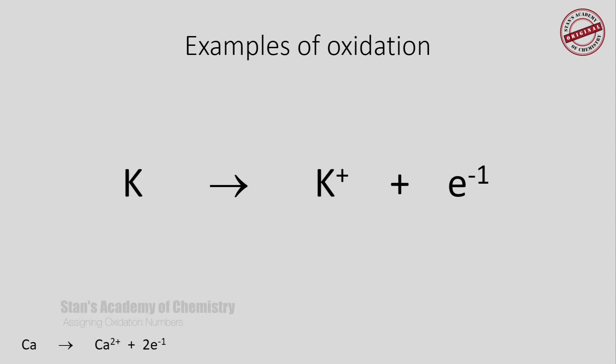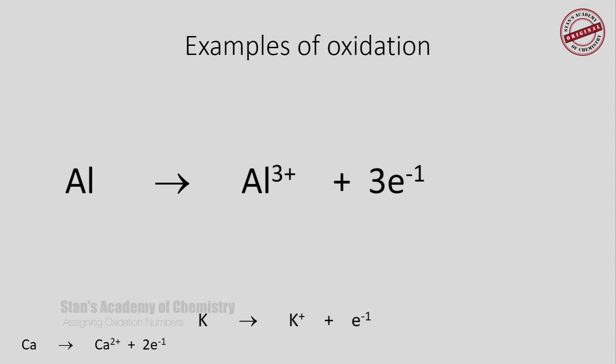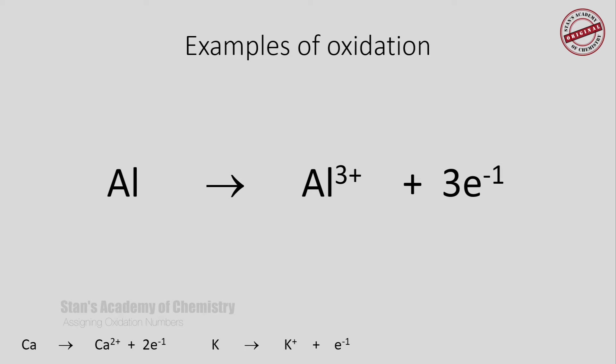Potassium on the left side has a zero oxidation state because the number of protons equals the number of electrons — it is +19 and -19. On the product side, it has only 18 electrons and 19 protons, as you can verify in the periodic table. Hence, the process is oxidation because there is an increase in oxidation number. Aluminum on the reactant side has a charge of zero because it is a neutral atom. On the product side, it has lost 3 electrons, therefore the oxidation number is +3, and the process is oxidation.